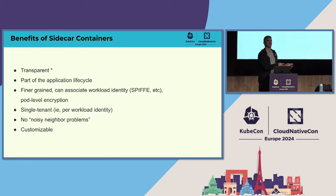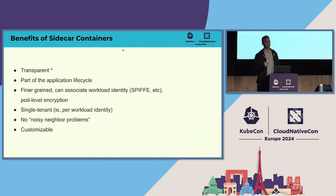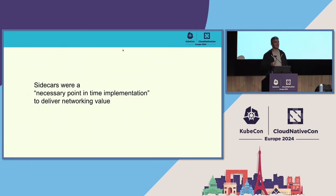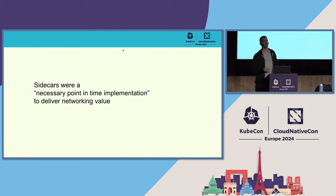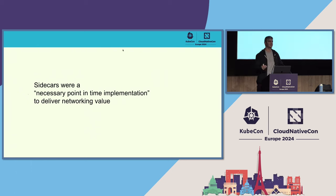We were able to assign cryptographic identity to workloads and have the sidecar handle that without sharing keys with a central component. I put an asterisk next to 'transparent' because it's not exactly as transparent as we want. You could argue the sidecar approach, before Kubernetes formally introduced it recently, was a necessary evil — a necessary point-in-time implementation to get the value out of application-level networking. API gateways and API management weren't cutting it for Kubernetes-based workloads scaling across on-prem and public cloud.